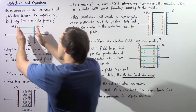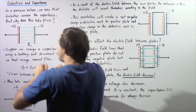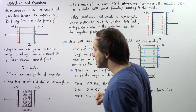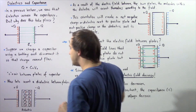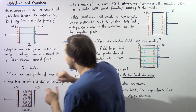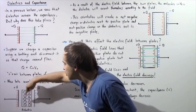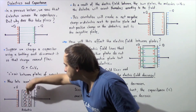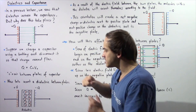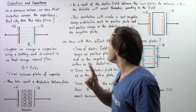Now, because there is an electric field that exists between these two plates, when we take our dielectric and place it between our plates inside that electric field, our molecules and atoms within our dielectric will orient themselves along our electric field.